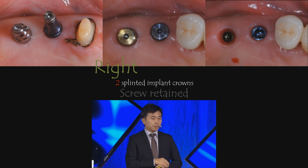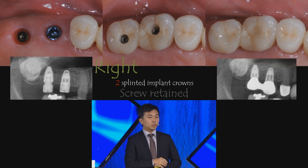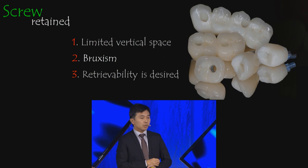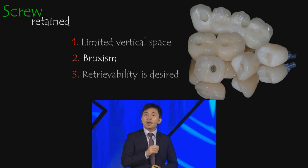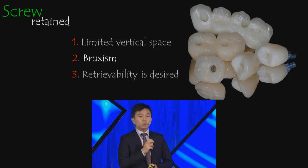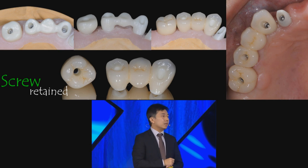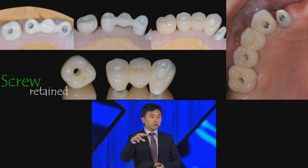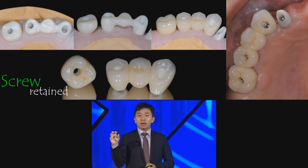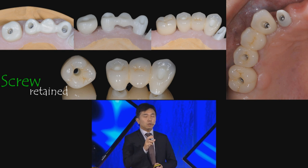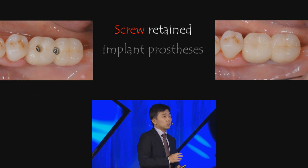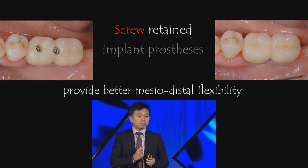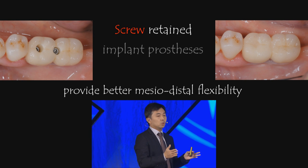In that case, we used two splinted implant crowns with a screw-retained design, eliminating cement retention concerns. We use screw-retained restorations for limited height space, bruxism, and when we want retrievability. With CAD/CAM technology, impression accuracy is critical — the fabrication of your framework will be as accurate as your master model. Screw-retained prostheses also allow better mesial-distal flexibility, meaning if you make a positional mistake, you can use screw retention to correct it.